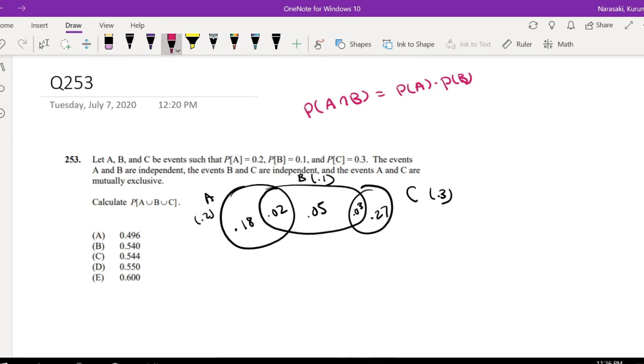So we're trying to find this part right here, A or B or C. Okay, so we can just add up all our values. This will be equal to 0.18 plus 0.02 plus 0.05 plus 0.03 plus 0.27. That's not too bad to do mentally. This part right here is 0.3, this part right here is 0.2, so then that's 0.3 plus 0.05. This is equal to 0.55, which is our answer, D.